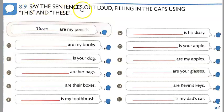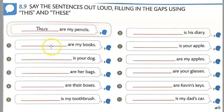And 8.9 — say the sentences out loud, filling in the gaps using 'this' and 'these.' We use 'these' because there is more than one pencil — there's an S, it's plural. There are two, three, four, five, six pencils, so we have to use 'these.' I'm going to go ahead and play the audio so you can fill in the gap, write each sentence out, and then practice speaking the sentence. Let's do the example first: 'These are my pencils.' You will write the sentence out — 'These are my pencils' — and then practice saying it.